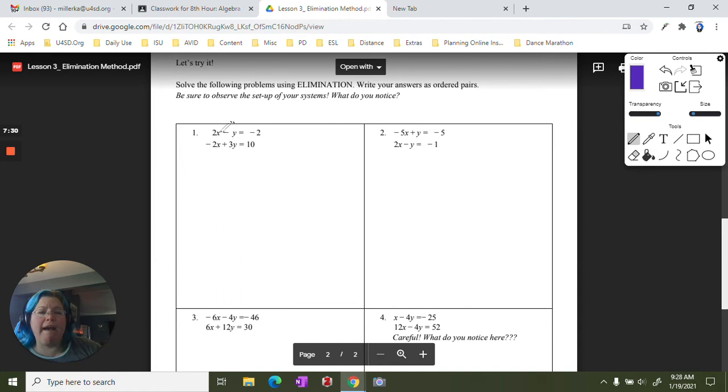So here, I have 2x minus y equals negative 2, and I have negative 2x plus 3y equals 10. Now, if you notice, neither of these have an x equals or a y equals. But what we do have is a positive 2x and a negative 2x. So I can recall that if I do 2x minus 2x, that is zero.